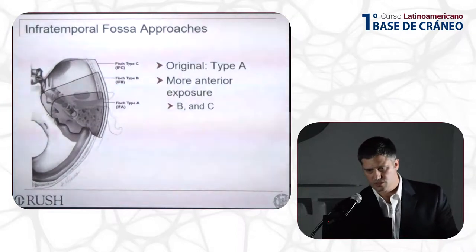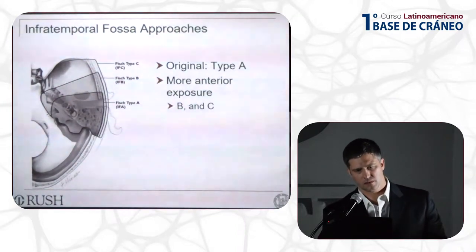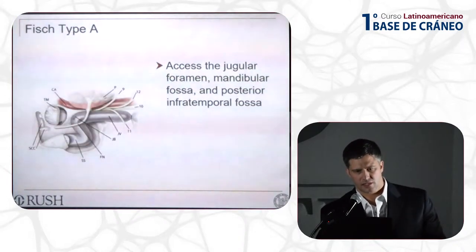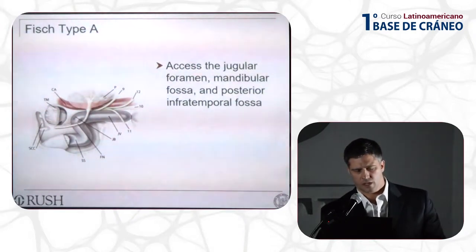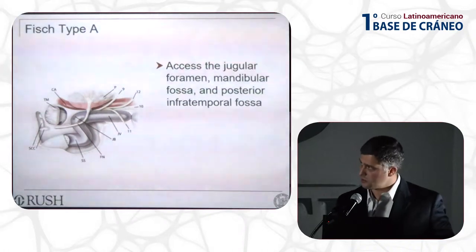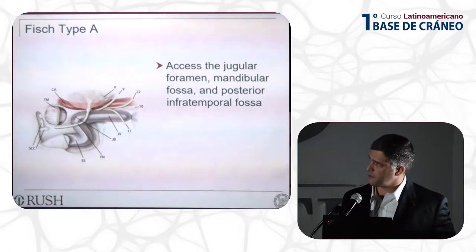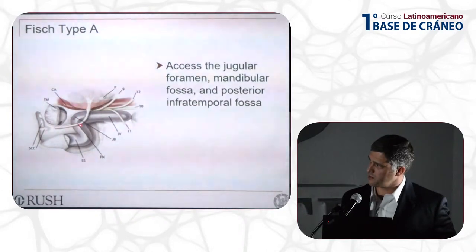Infratemporal fossa approaches were developed by Fish. Type A is the original; types B and C offer more anterior exposure. They give access to the jugular foramen, infratemporal fossa, and posterior infratemporal fossa. In the classic infratemporal fossa approach, the external auditory canal is closed, and there is anterior rerouting of the facial nerve, which is decompressed in its vertical segment and at the second genu all the way up to the geniculate ganglion.